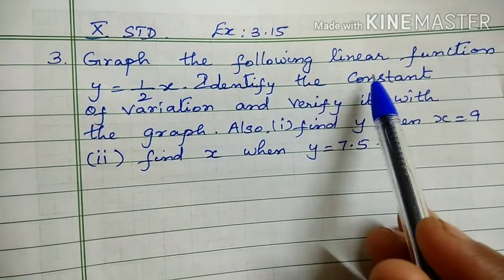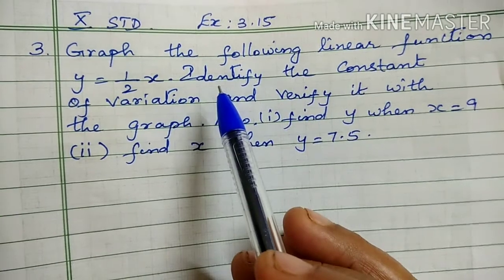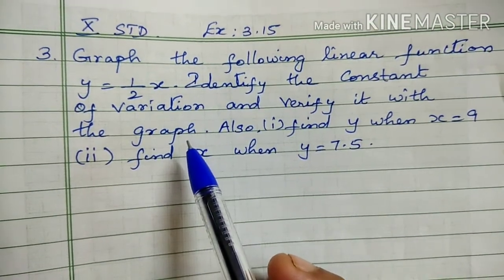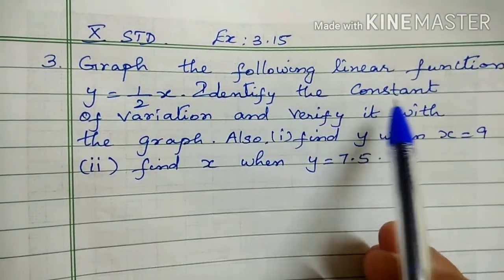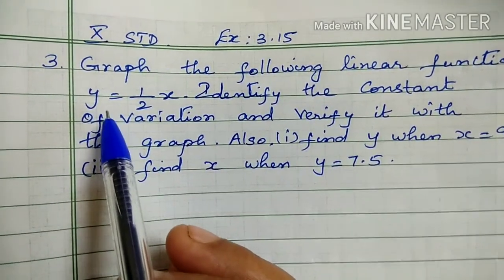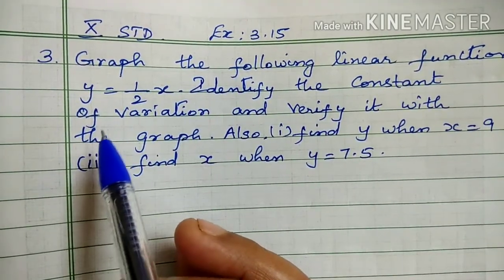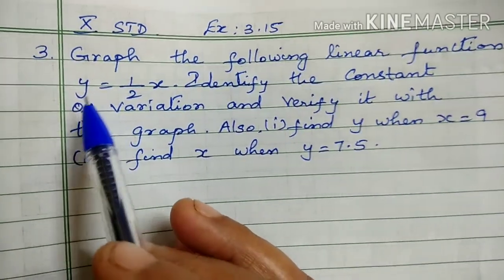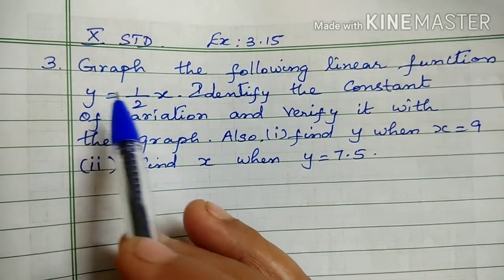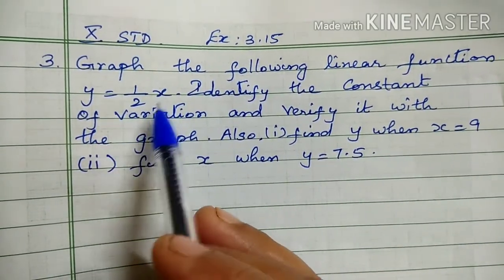Graph the following linear function: y equal to 1 by 2 x. The equation is y equal to 1 by 2 x. Let's learn the equation of direct and indirect variation. y equal to kx, where 1 by 2 is k. The equation is direct variation.